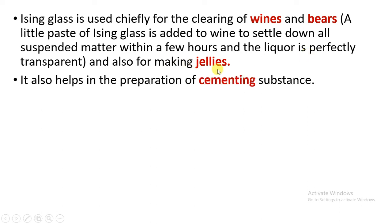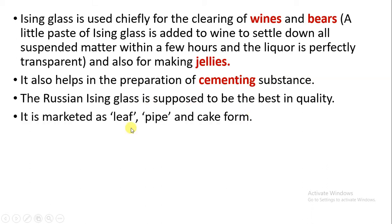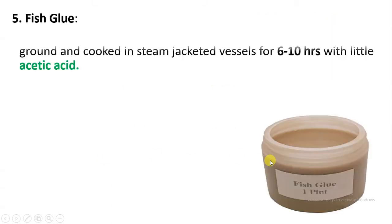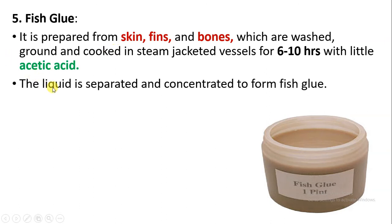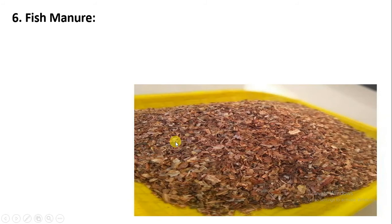Isinglass is also used to make jellies and cementing substances. Russian isinglass is the best quality isinglass and is marketed in leaf, pipe, and cake form. In India, the best isinglass is obtained from fishes like perches and Indian salmon. Fish glue is prepared from the skin, fins, and bones of the fish. The skin, fins, and bones are washed, ground, and cooked in a steam jacket vessel for about six to ten hours, then reacted with acetic acid. The liquid separated forms fish glue, which is used as an adhesive for book binding, labels, paper, shoes, boxes, and furniture.